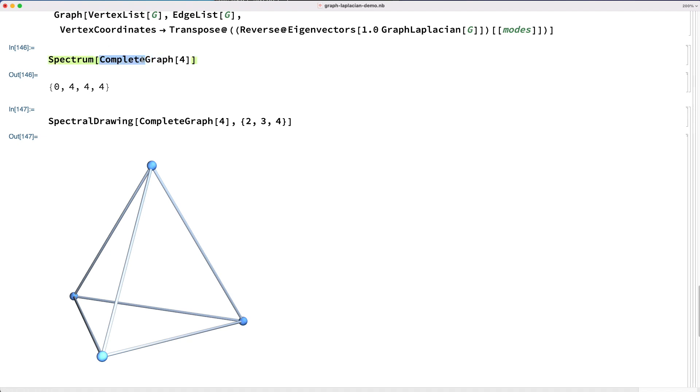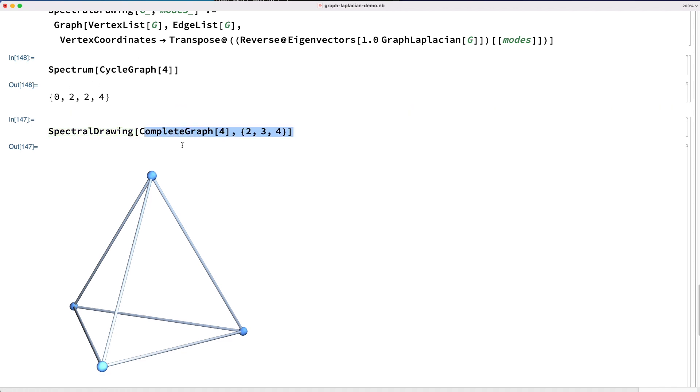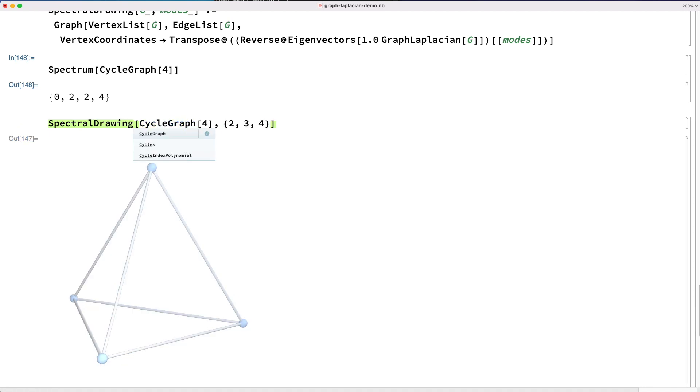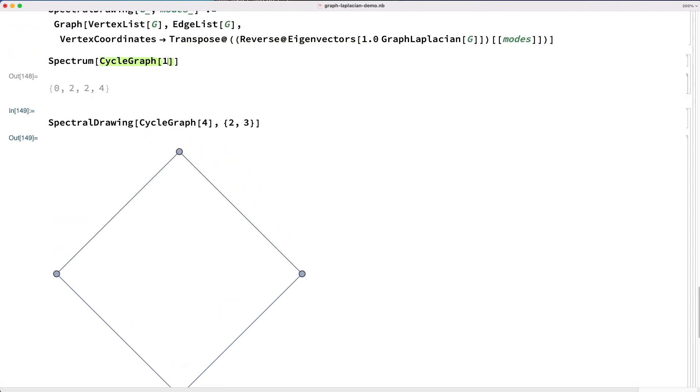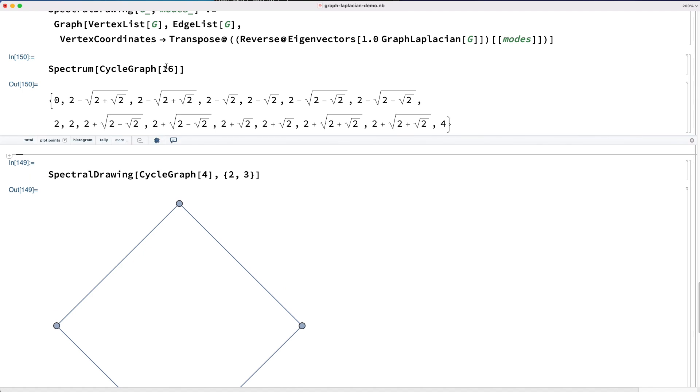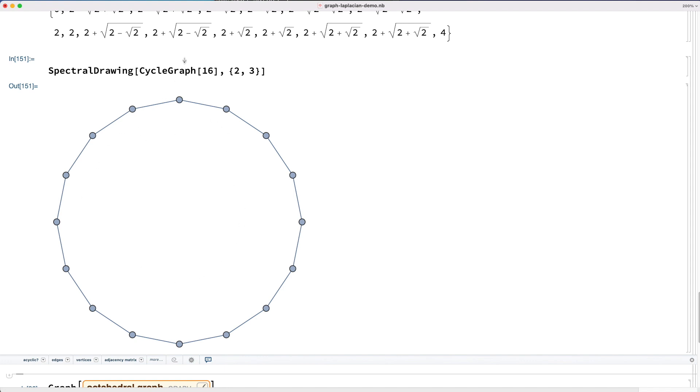Now, if we look at this for the cycle graph, we see two repeated eigenvalues. And so I'm going to plot it using the first two eigenfunctions. And look, we get a beautiful drawing again. In fact, if we take the 16 vertex cycle graph, then we see that in the spectrum, we get again two repeated eigenvalues. And we get exactly the drawing we'd like to see, the cycle graph represented as vertices on a perfect circle.